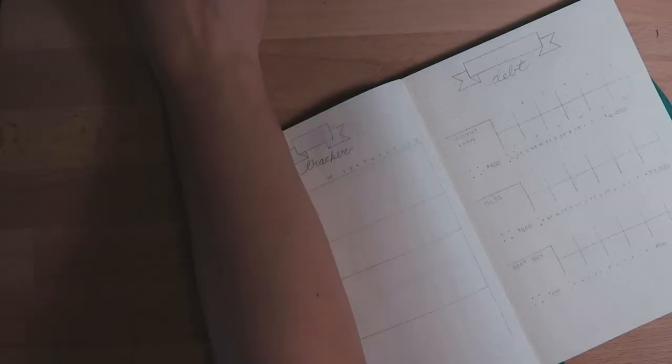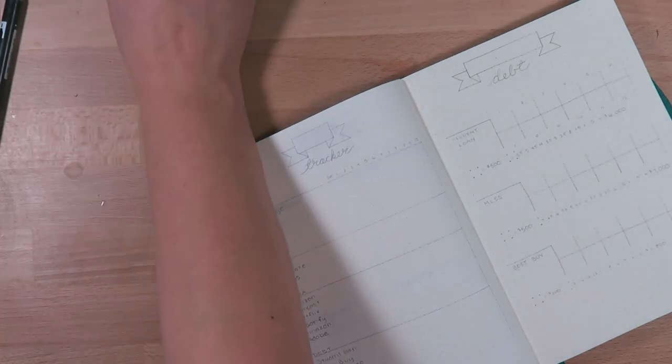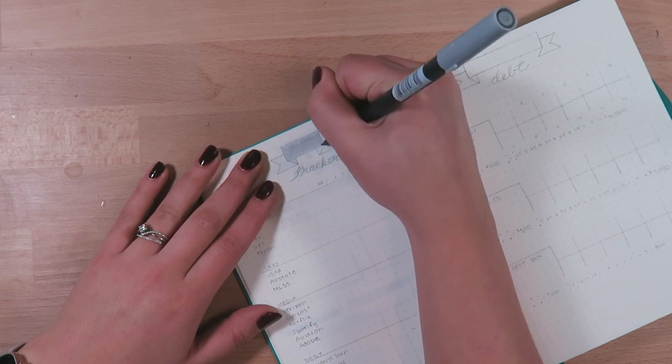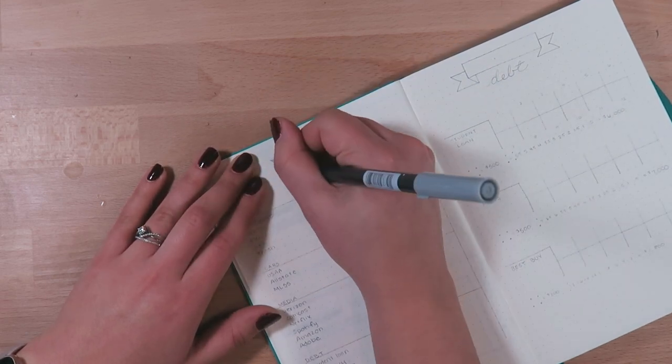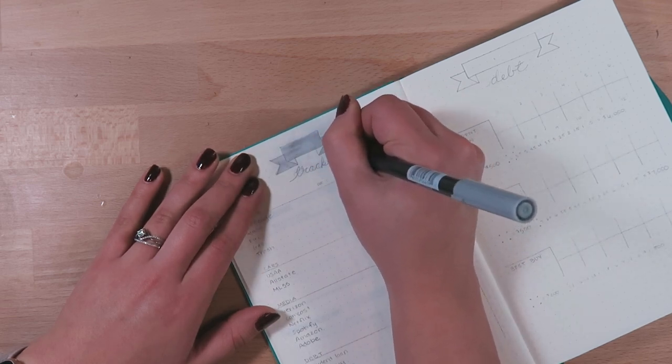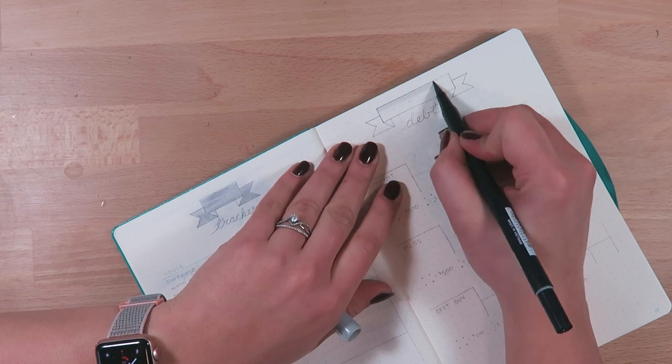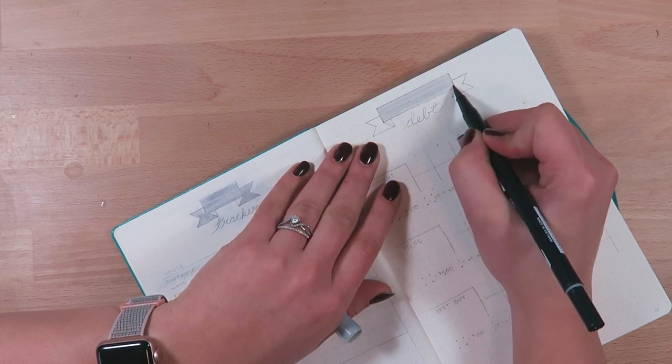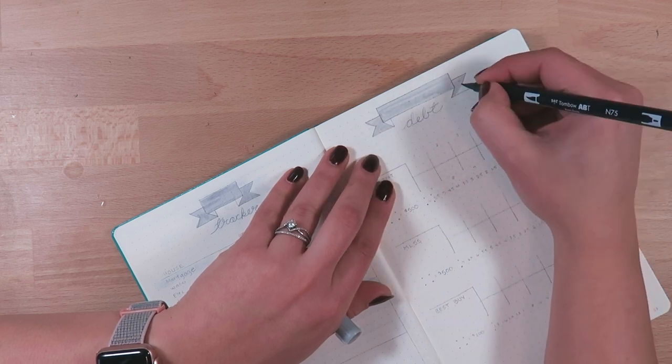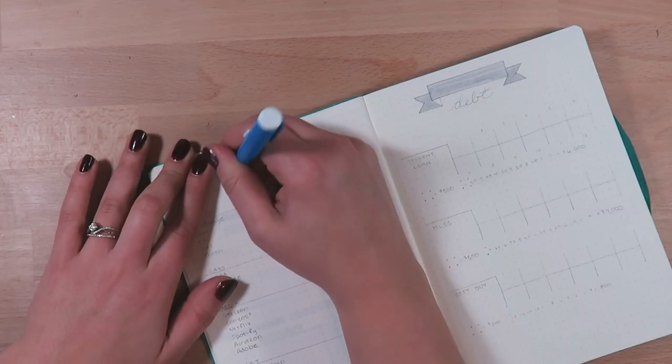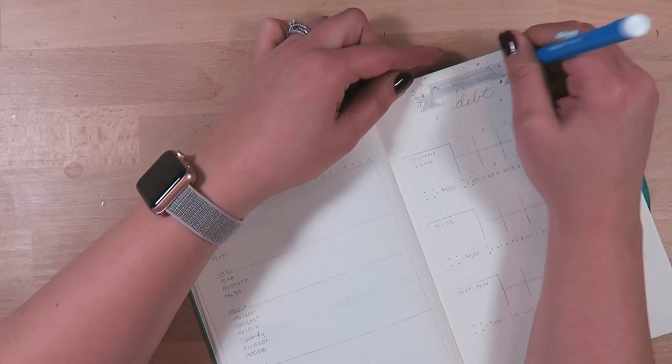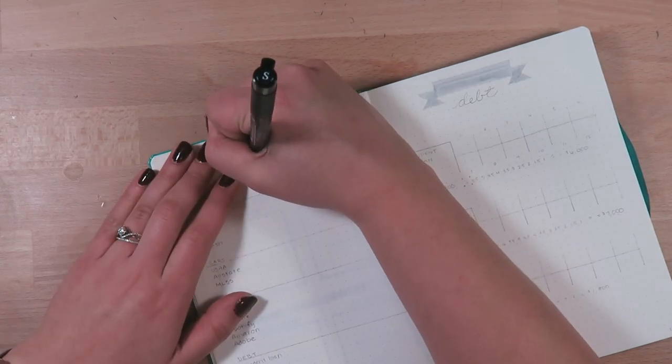I have done this way of bill tracking and kind of like a debt tracker page for the past three years that I've been using my bullet journal and it is the most effective. We paid off our truck last year and it just feels so rewarding to go back in your bullet journal, as silly as that sounds, and color in this debt tracker.